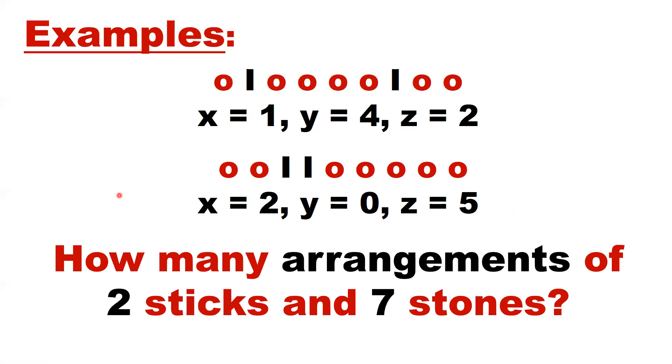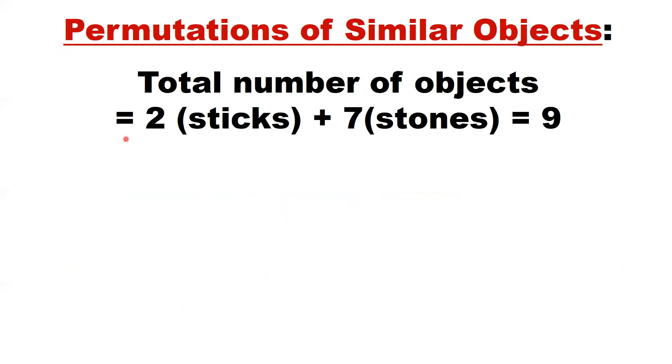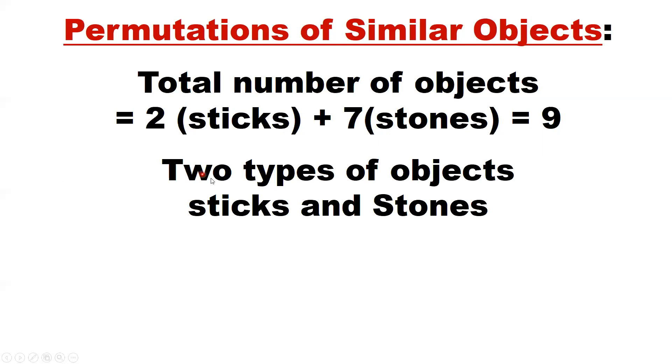The question here is how many arrangements of two sticks and seven stones? Look at put them in this order. This is also a permutation problem. Permutations of similar objects.